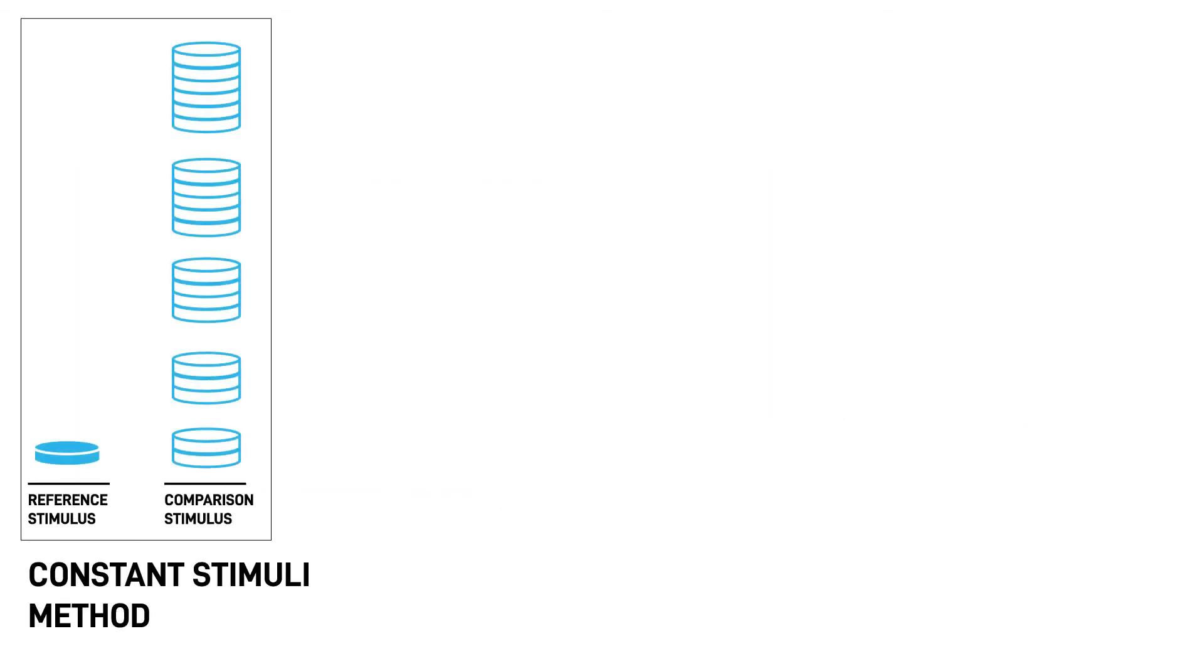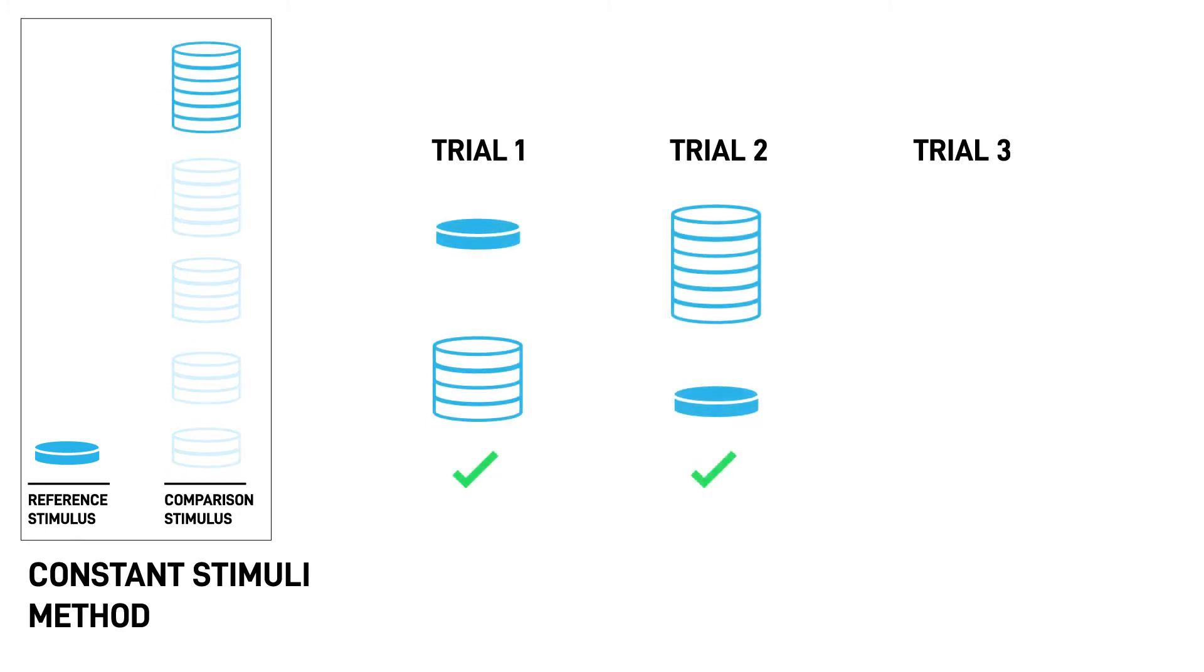In the constant stimuli method, the experimenter presents a predefined set of comparison stimuli to the observer in random order. In each trial, the observer is presented with two stimuli and is asked to say if they are the same or different. The observer is unaware which stimulus is the reference. This method requires the experimenters to define a small set of stimuli around the sensory threshold beforehand. Therefore, they need to have a preliminary estimate of the sensory threshold.